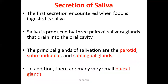Now we expand on saliva secretion — the mechanisms involved and the function of saliva in the GIT. Saliva is the first secretion encountered when food is ingested. It is produced by three pairs of salivary glands that drain into the oral cavity.